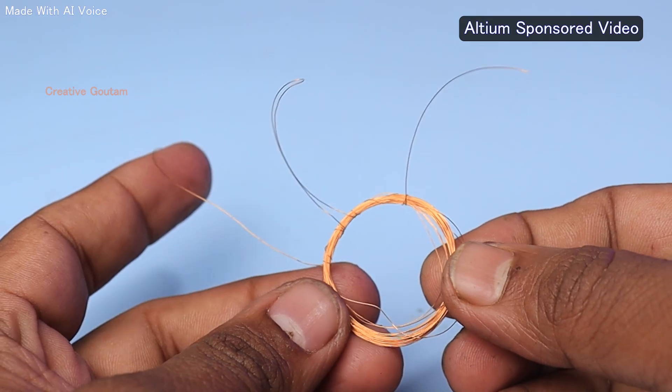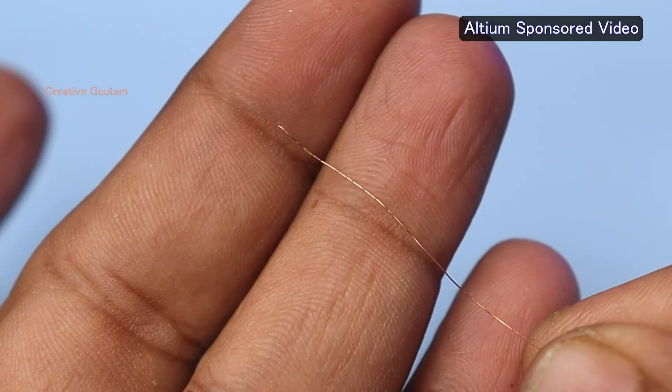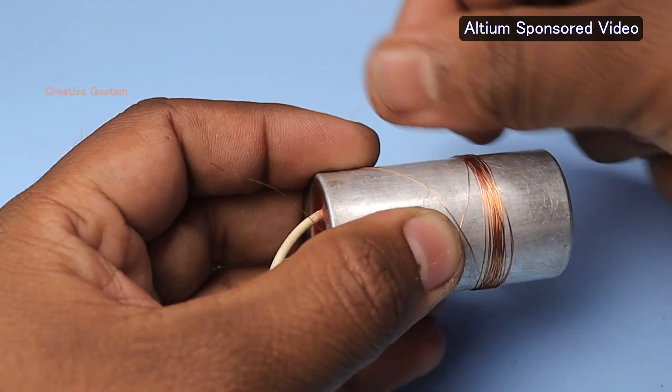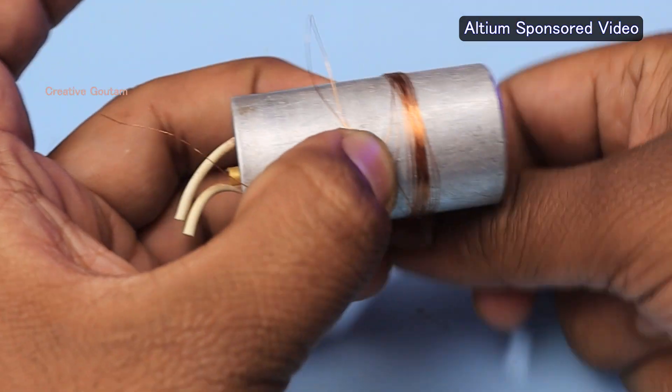First, I made a center tap coil using this thin copper wire, which I got from an old low RPM DC motor. I gave 25 plus 25 turns to make this coil.